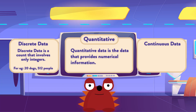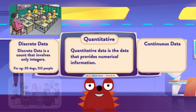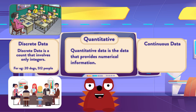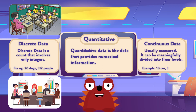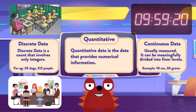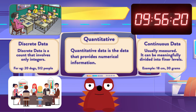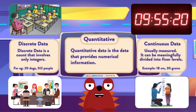The discrete values cannot be subdivided into parts. For example, the number of students in a class or the number of workers in a company. Continuous data is something that is usually measured and can be meaningfully divided into finer levels. For example, the amount of time required to complete a project or the height of children.